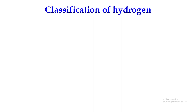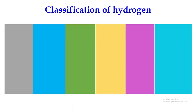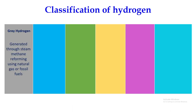Let us now learn about the classification of hydrogen. It may be classified as grey hydrogen, when hydrogen is generated through steam methane reforming using natural gas or fossil fuels.